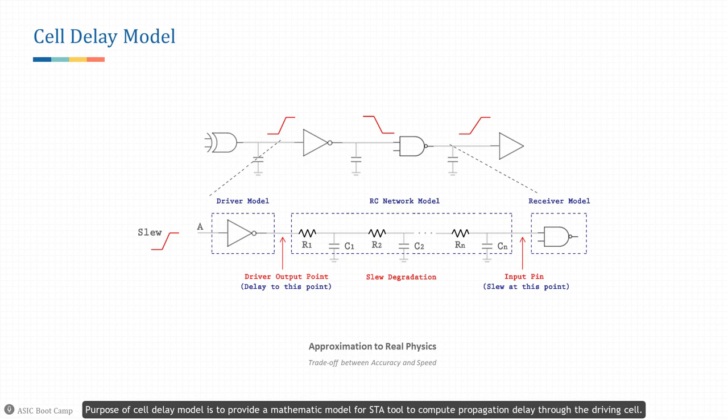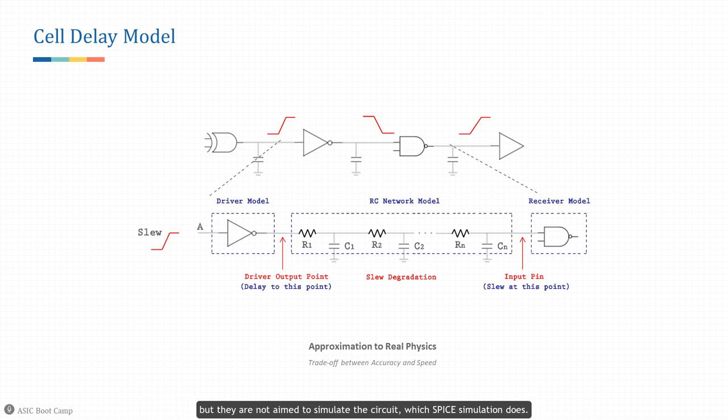The purpose of the cell delay model is to provide a mathematical model for the STA tool to compute propagation delay through the driving cell. All models used in STA try to correlate with real physics as closely as possible, but they are not aimed to simulate the circuit as SPICE simulation does. So all delay models are a trade-off between runtime and accuracy.